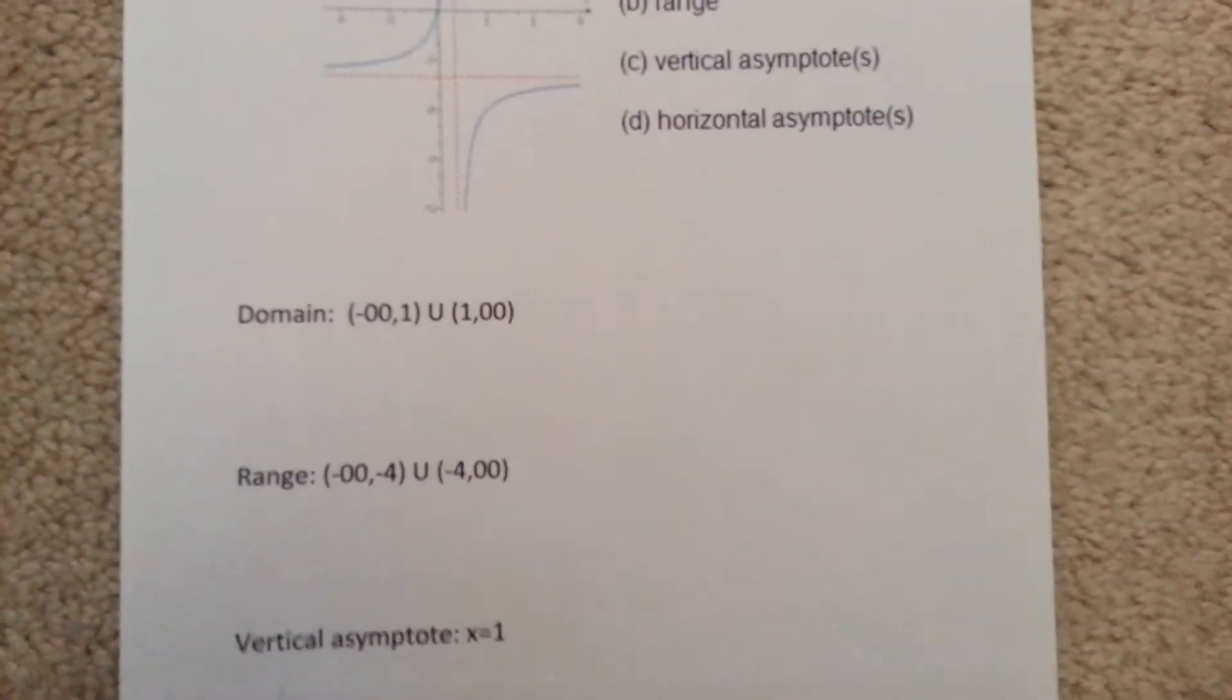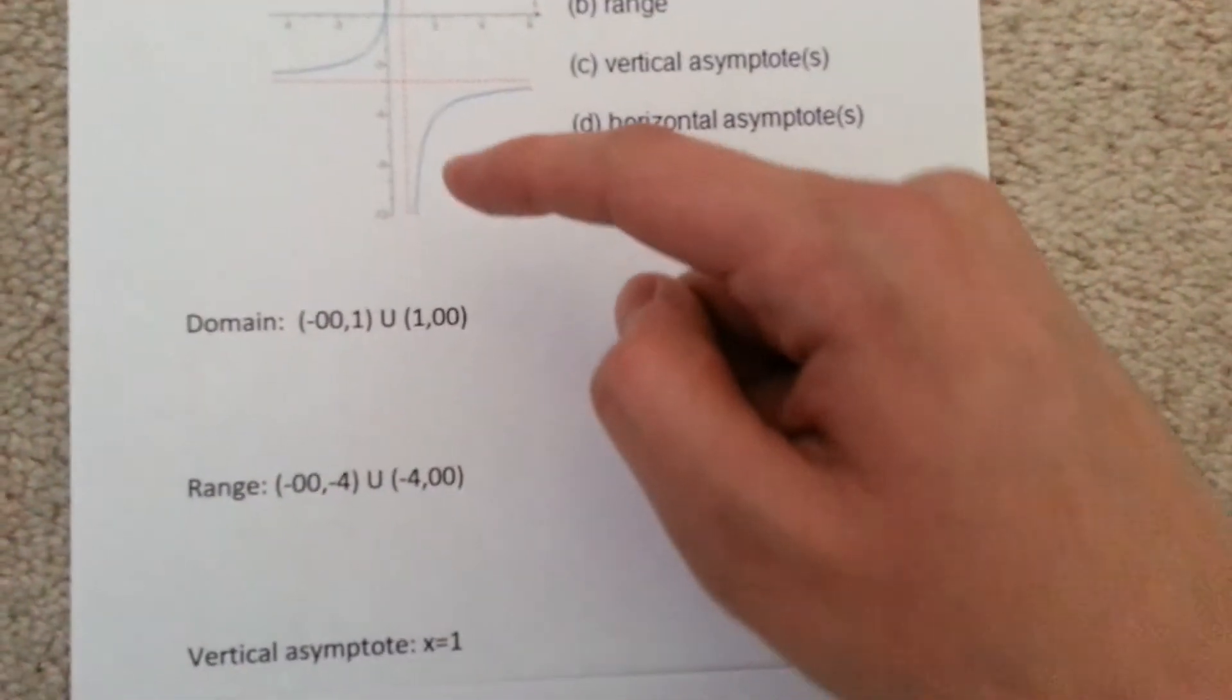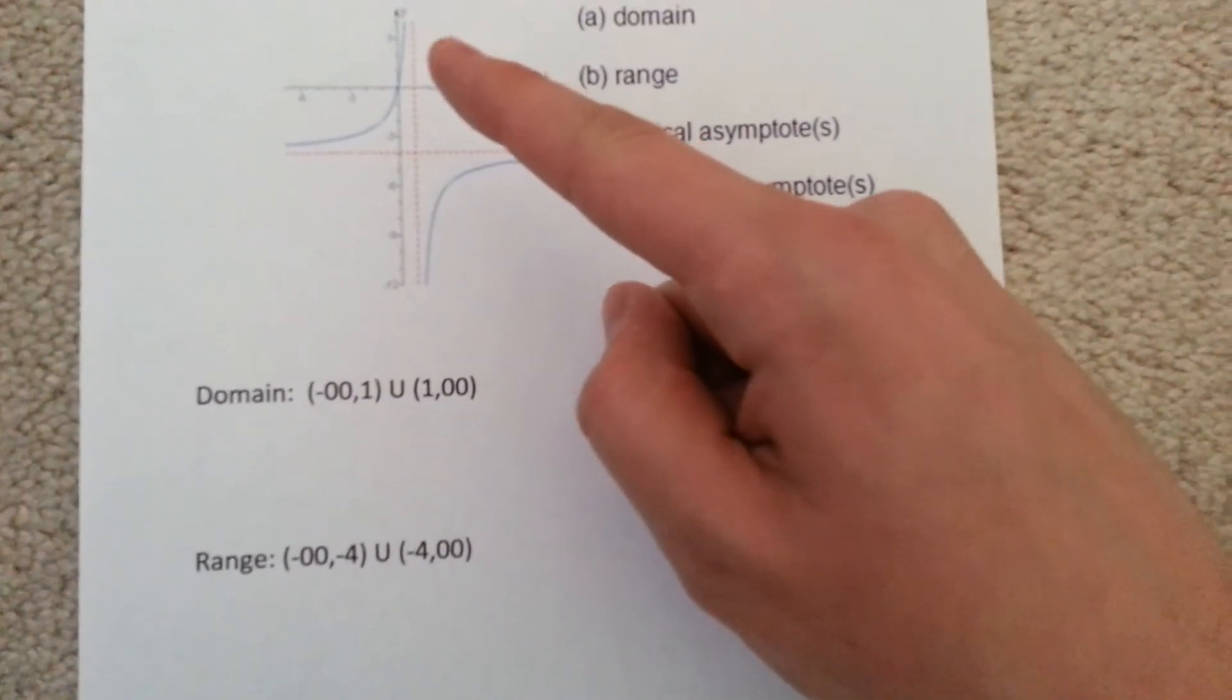The vertical asymptote is at 1, as you see here, so x equals 1.